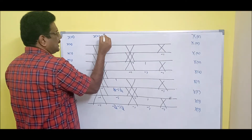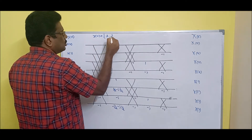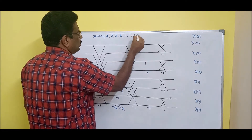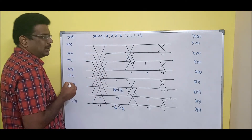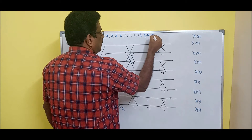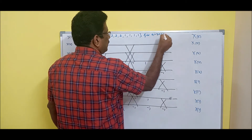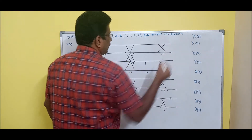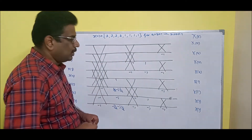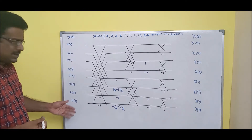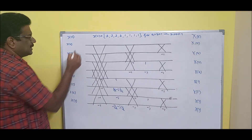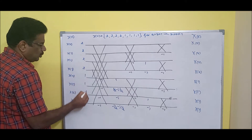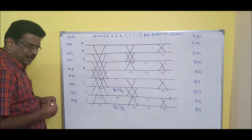Let us say x of n is equal to {2, 2, 2, 2, 1, 1, 1, 1}. The question is: find the 8-point DFT using DIF FFT. Since this side is direct, I don't have any doubt — I directly make it as {2, 2, 2, 2, 1, 1, 1, 1} and proceed with the calculation. It is very simple.